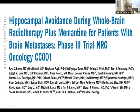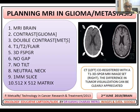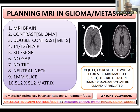When asking for the MRI protocol for hippocampus contouring, the most important sequence is the 3D FSPGR sequence — that is the MPRAGE sequence in Siemens. You have to give your radiologist this slide: MRI brain with contrast, double contrast, 3D FSPGR sequence, no gap, no tilt, neutral neck position, 1mm slice thickness, 512 matrix.